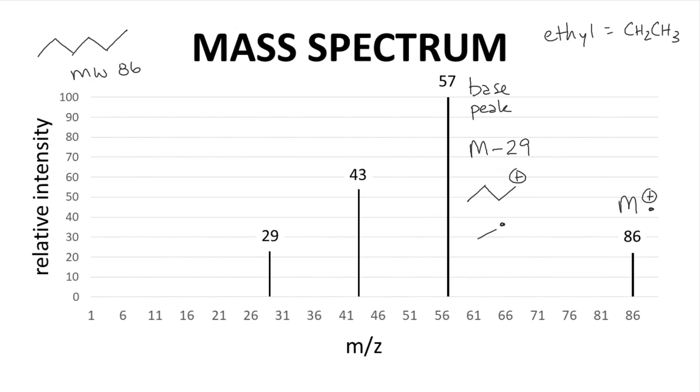Uh-oh. We do see a peak at 29. That's fine. Apparently some of our parent ion fragments to make an ethyl cation and a butyl radical. We observe the ethyl peak at m/z 29, and the butyl radical is not observed. So we might call this peak our M-57 since the parent ion has lost 57, leaving behind 29.